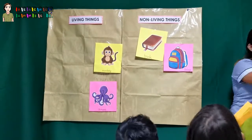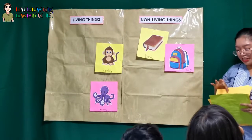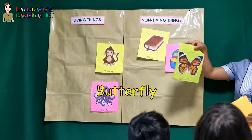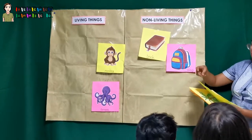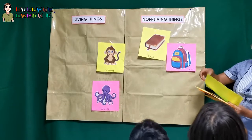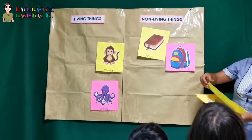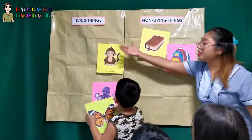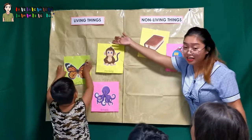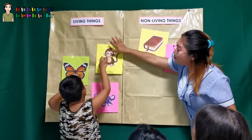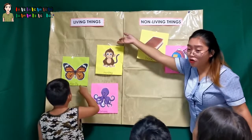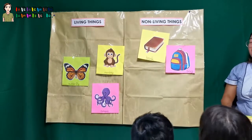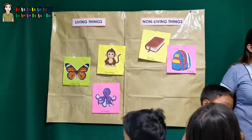Okay, how about the next picture? This is a? Butterfly. Very good job. Okay, so Jabari, can you put the butterfly where it belongs? Monkey, octopus, butterfly — so mga living things. Okay. Sit down, Jab.